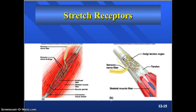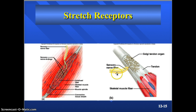Golgi tendon organs are found in the tendons close to their attachments to muscles. The tendon is connected to the muscle fibers directly and also to a sensory neuron. It is stimulated by increased tension and causes a reflex to inhibit contraction, so you relax your muscles.